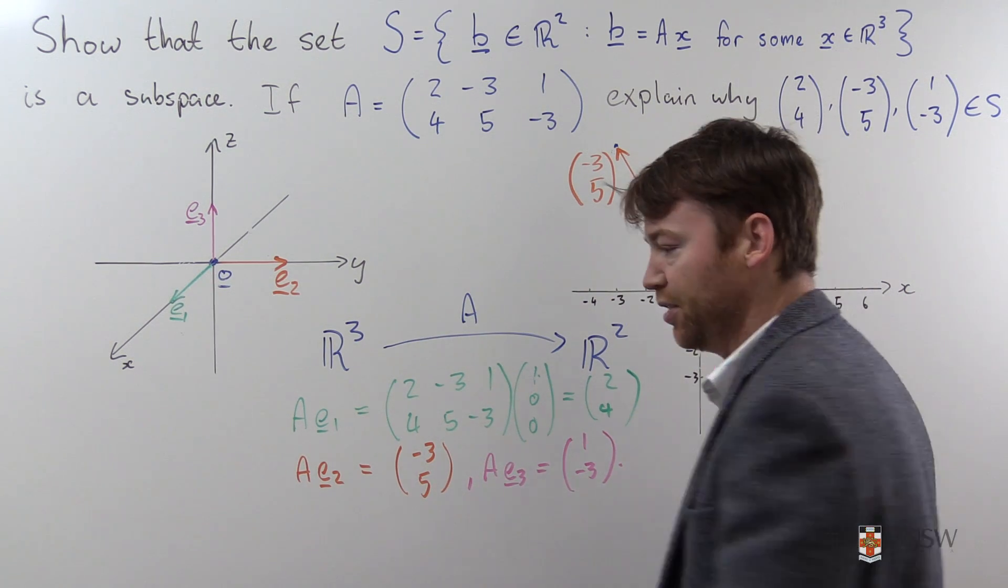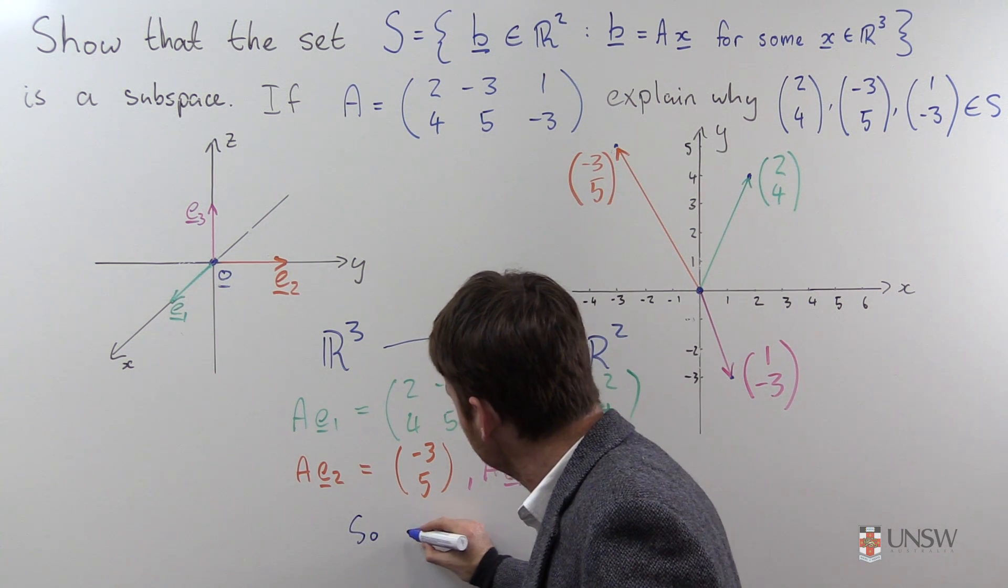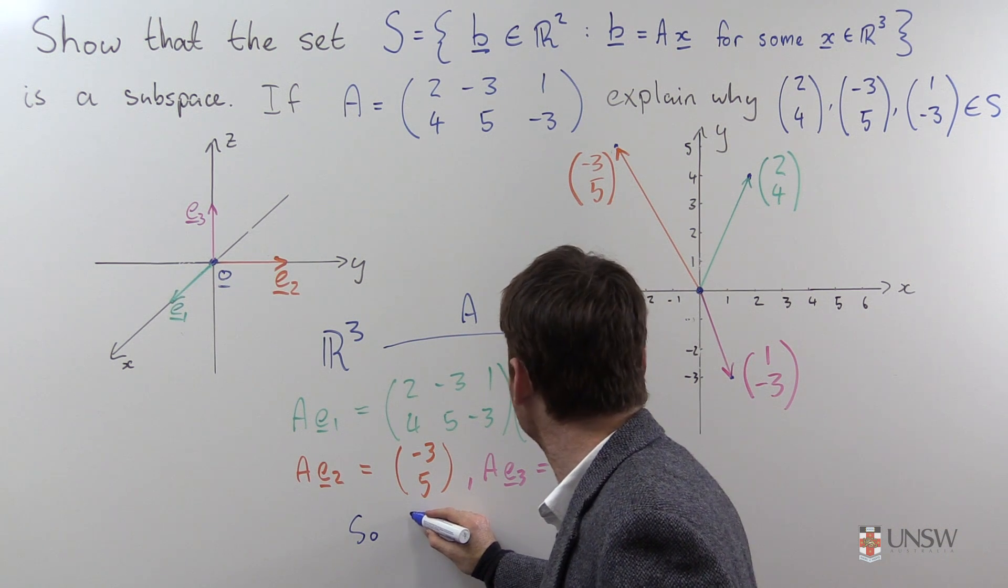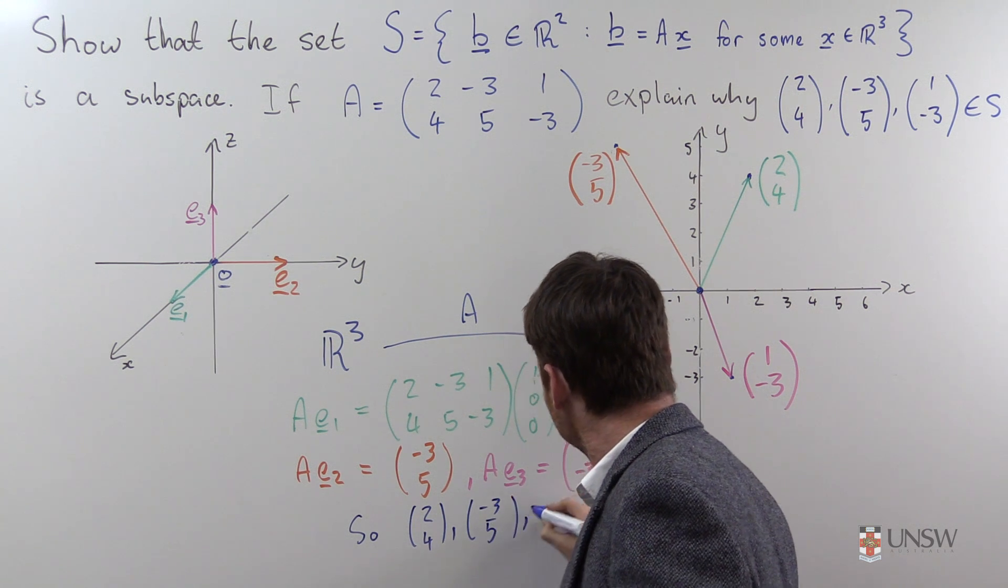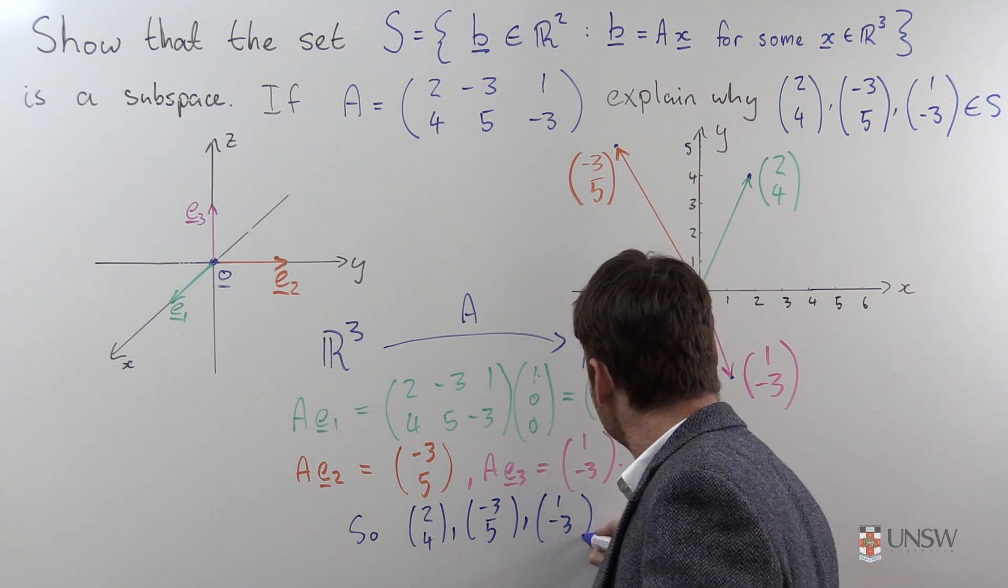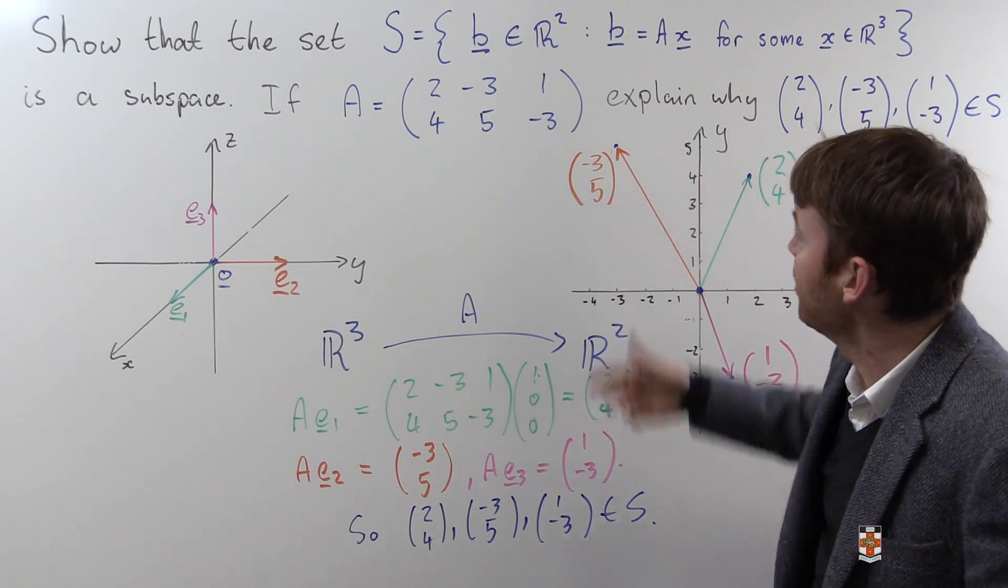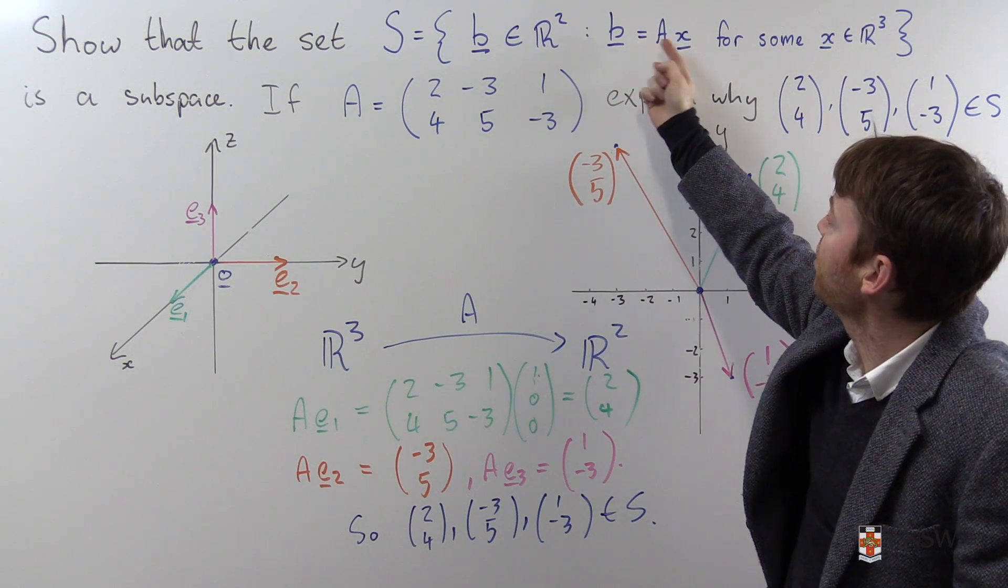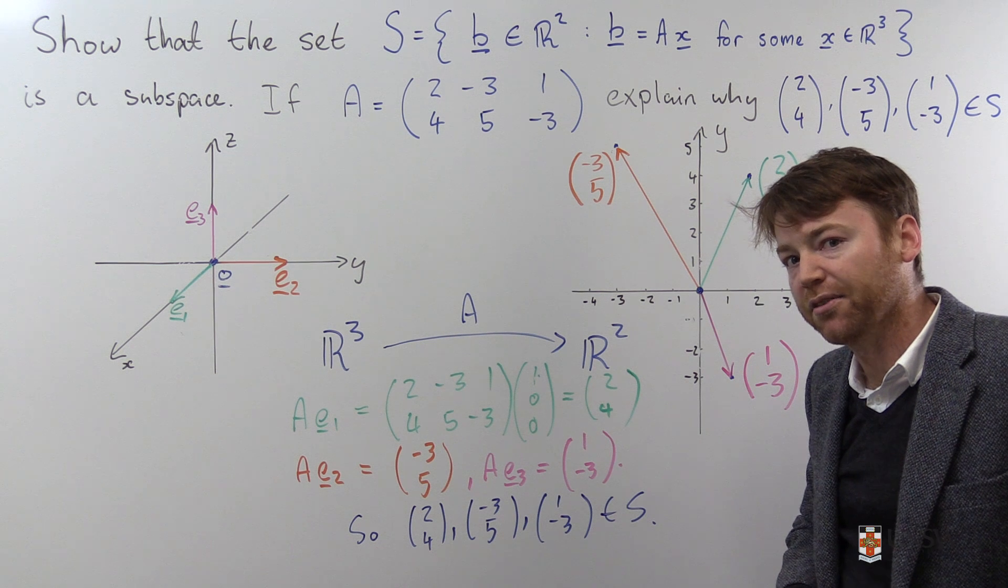You might like to conclude at this point that 2, 4, negative 3, 5, 1, negative 3 are all elements of S. They all have this shape. They're all elements of R2, and they can be represented as the matrix A times some vector from R3.